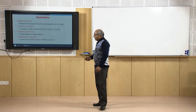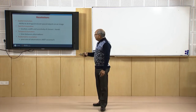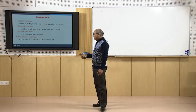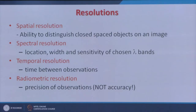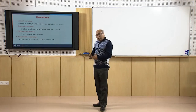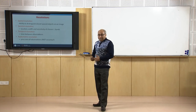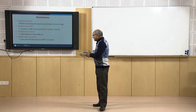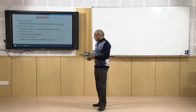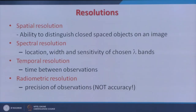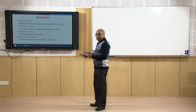The last of the four resolutions is radiometric resolution: the precision of observations, which depends on the sensitivity of the sensor. Note that precision and accuracy are different terms — precision depends on sensor sensitivity while accuracy is a statistical term. The four types of resolution in remote sensing are: spatial resolution, spectral resolution, temporal resolution, and radiometric resolution.